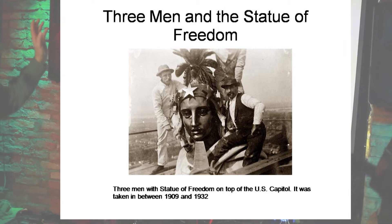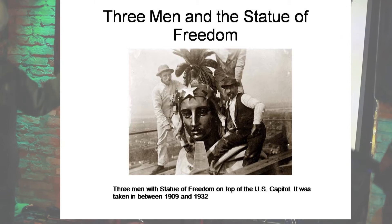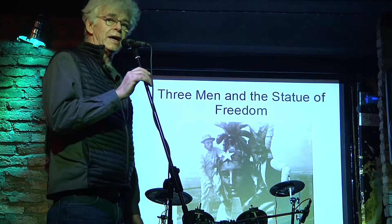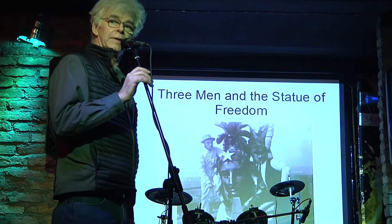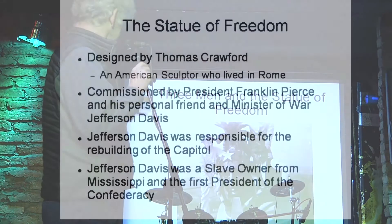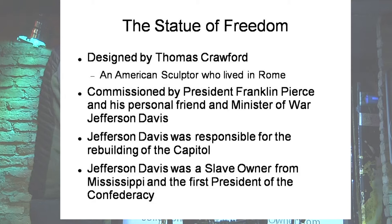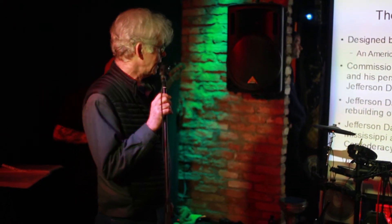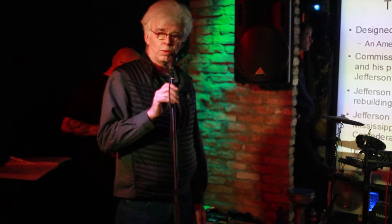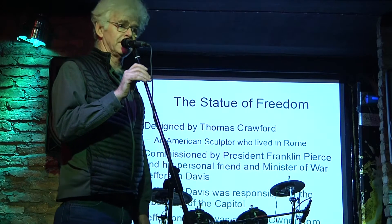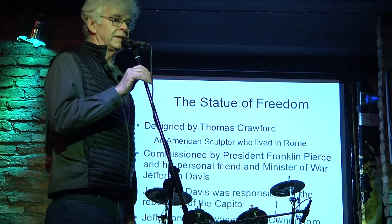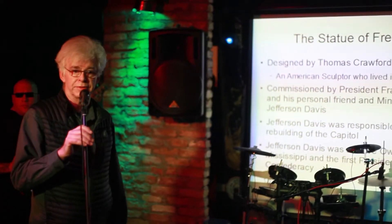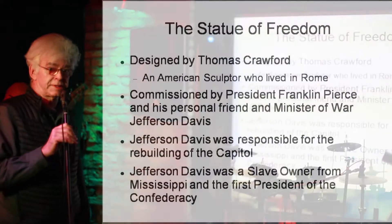You see these plumes, you see this bird, you see these 13 stars — very patriotic. But it was not originally planned that way; it was supposed to be different. The Statue of Freedom was designed by Thomas Crawford and commissioned by President Franklin Pierce. He had a minister of war named Jefferson Davis, who, as many of you may know, was the first president of the Confederacy of the Southern States — a slave owner from Mississippi.